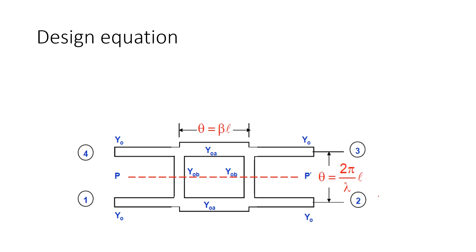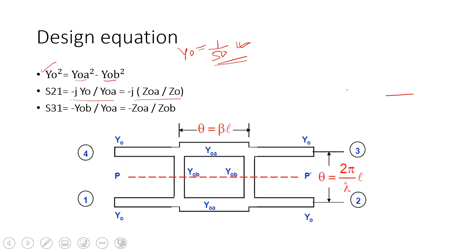We have few design equations. How these design equations are coming, there are mathematical explanations, and I am going to those things later. But first, let's see what are the design equations. First design equation is this. We know what is Y0, it is always 1 by 50 if nothing is mentioned. We don't know these two things. We have another design equation, this is S21. Then we have S31. These are three design equations. Here, how many unknowns are there? 1, 2, 3, and 4.